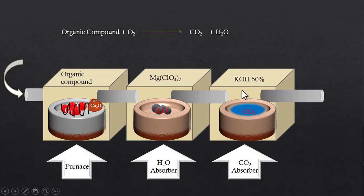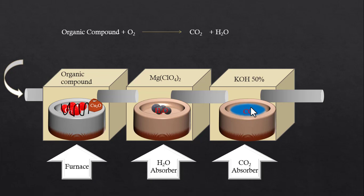Carbon dioxide moves into the third chamber where 50% potassium hydroxide solution is kept. It must also be noted that the potassium hydroxide 50% solution is weighed as well, so that the absorption of carbon dioxide can be calculated easily.